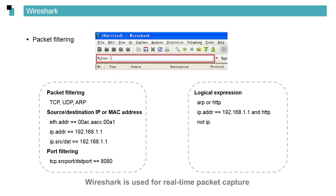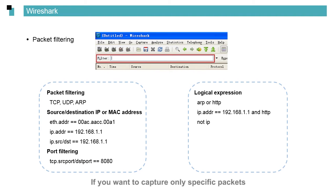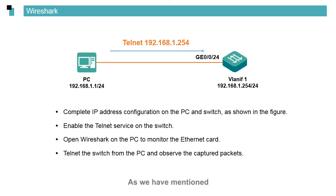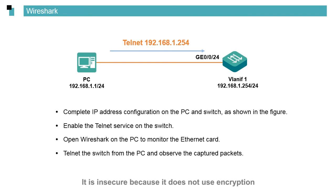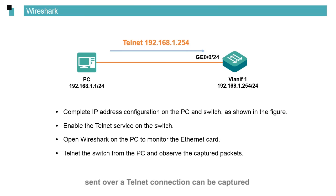Wireshark is used for real-time packet capture and therefore can capture a large number of packets. If you want to capture only specific packets, enter the desired conditions in the filter field. As we have mentioned, Telnet is a remote management tool. It is insecure because it does not use encryption. Therefore, any data including passwords sent over a Telnet connection can be captured through mirroring and exposed.